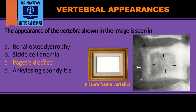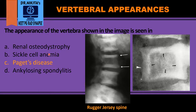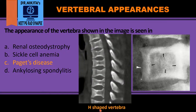The picture frame vertebra is generally confused with rugger jersey spine, which is seen in renal osteodystrophy. The difference is that in rugger jersey spine, we see sclerosis only along the superior and inferior end plates — the anterior and posterior borders are not affected. This gives a black and white appearance like a rugger jersey, and it is seen in renal osteodystrophy.